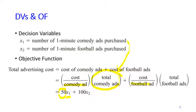The cost for each football ad is $100, and the total number of football ads that we would like to purchase is X2, so 100 times X2. And this is our objective function.